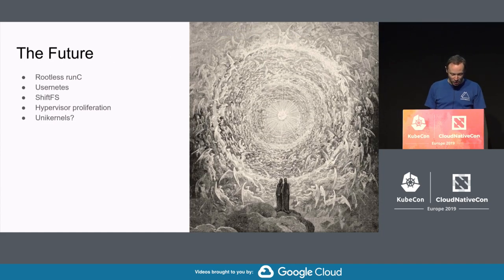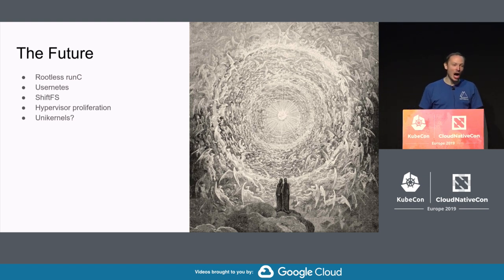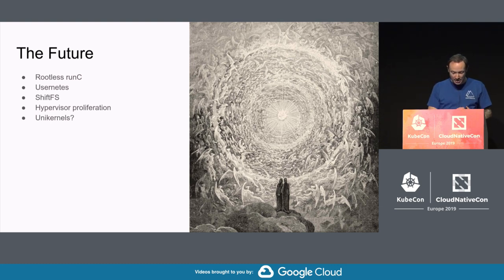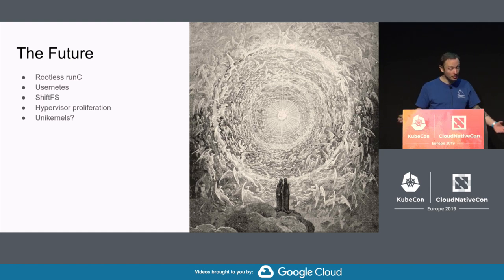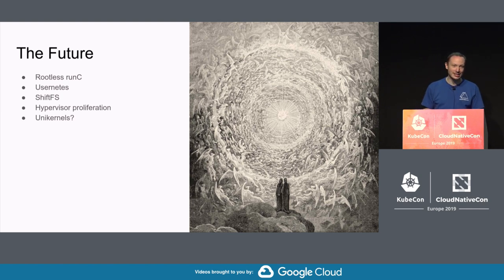What else will happen in 2019? Rootless RunC is already here. usernetes is an unprivileged Kubernetes in a user namespace, again from Akihiro. ShiftFS may well land soon courtesy of the Canonical team. The container versus hypervisor battles continue in data centres throughout the lands, and building containers in hypervisors seems a sensible compromise when we don't trust them. Unikernels are still here, although they don't provide the most obvious container build context at this time.